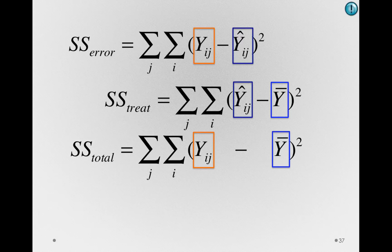What we've actually done here is partition, or cut up, the total sums of squares — the total amount of variability in Y — to be a function of the sums of squares associated with error, or just noise within groups, and the sums of squares associated with group deviations from the grand mean. The sums of squares for error plus the sums of squares for treatment equal the sums of squares total.